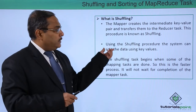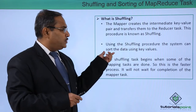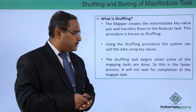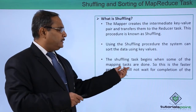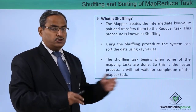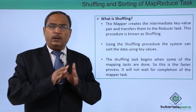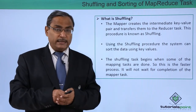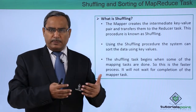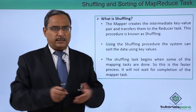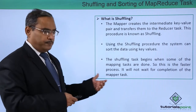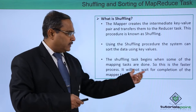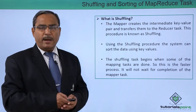Using the shuffling procedure, the system can sort the data using the key values. The shuffling task begins when some of the mapping tasks are done — it does not wait for all mappers to complete their operation. To make the system faster, when some of the mappers complete their task, the shuffling operation will be in process. This is a faster process and it will not wait for the completion of all the mapper tasks.